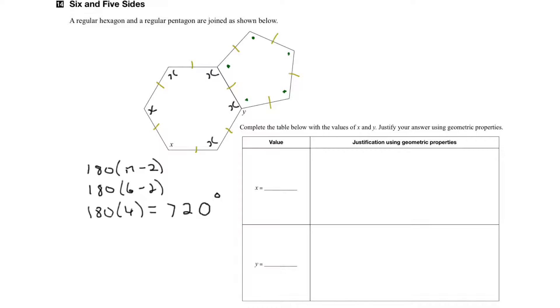And that is the total for all of the x angles added together. So if we wanted to just find x, what we would say here is that all six x's together add up to 720 degrees, therefore, 720 divided by 6, so x would equal 120 degrees.